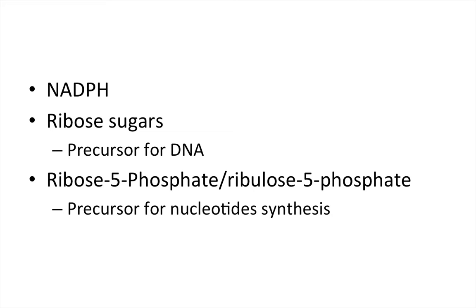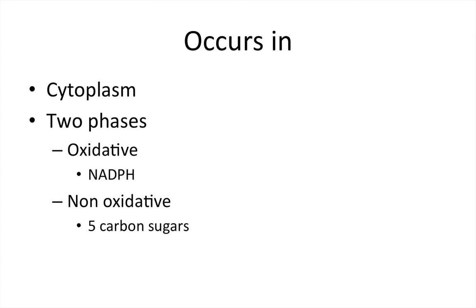The first is that it's used to make NADPH. The second is that it's used to make ribose sugars, which are a precursor for DNA. And then you've got ribose 5-phosphate and ribulose 5-phosphate — you may see both, as they are just two consecutive steps. This is a precursor for nucleotide synthesis. This pathway occurs in the cytoplasm, and there are two main phases: the oxidative phase and the non-oxidative phase.